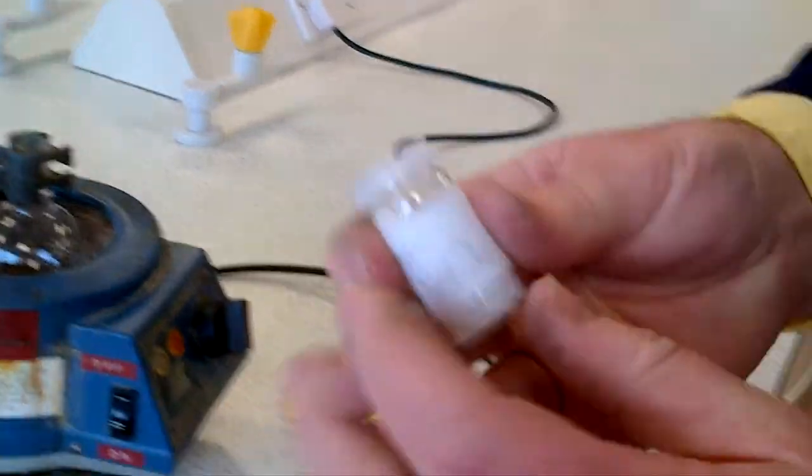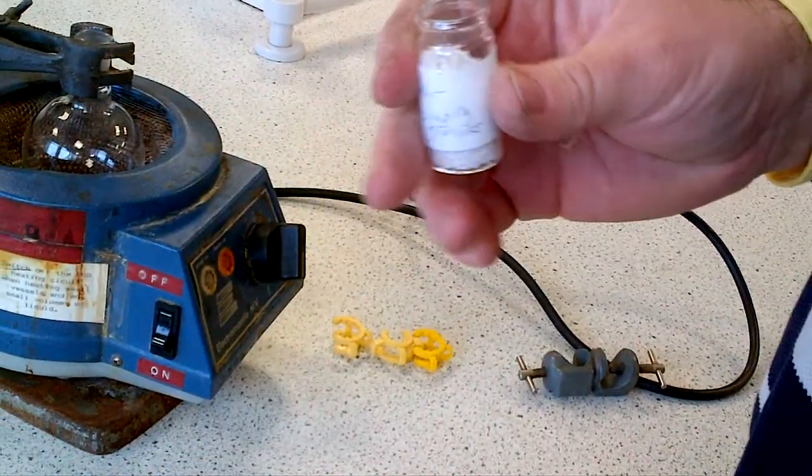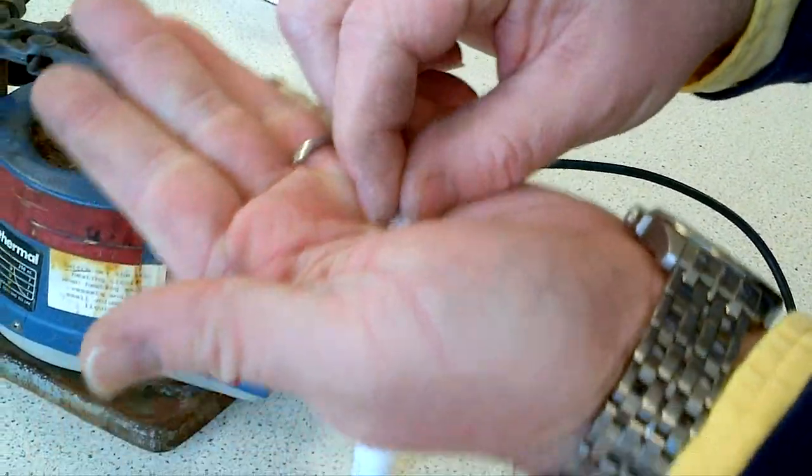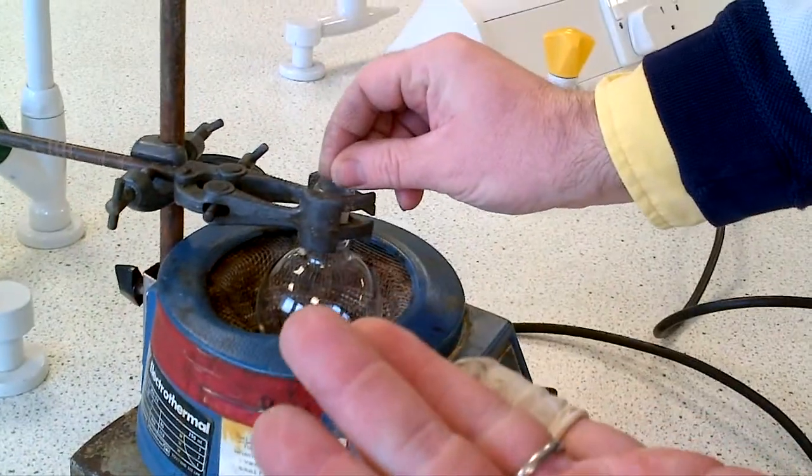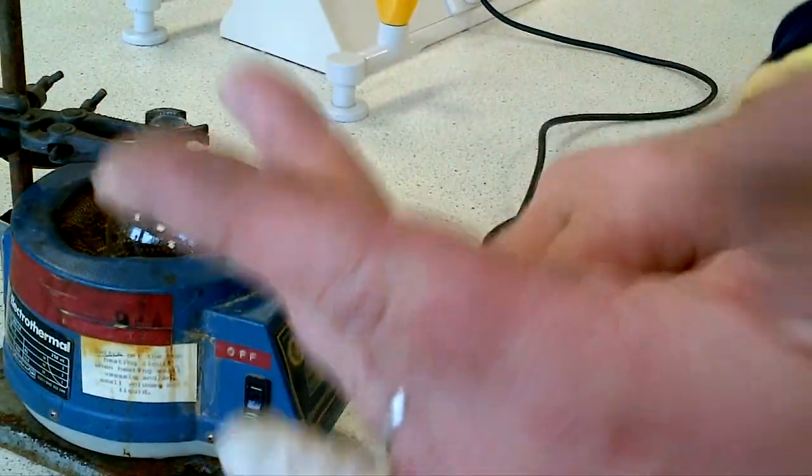At that point, it's best to get some anti-bumping granules, white or black. Black is probably better to visually spot. Take a couple of granules and throw them into the liquid. That'll stop the organic liquid from bumping up.